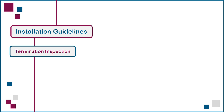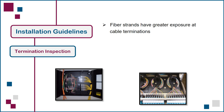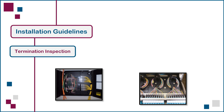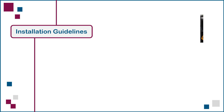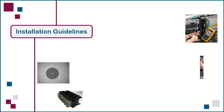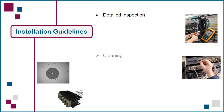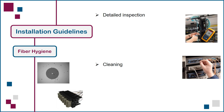When inspecting or auditing a fiber cabling installation, emphasis is usually placed on the termination of the cables at both ends due to the greater exposure of the fiber strands. Items to verify for both cables and cords include bend radius control, controlled management of excess length or slack, adequate strain relief at the connector, sufficient connector mechanical resistance to prevent easy disconnection, and labeling that clearly identifies each link. No discussion on optical fiber cabling installation can be considered complete without covering detailed inspection and cleaning, also referred to as fiber hygiene.